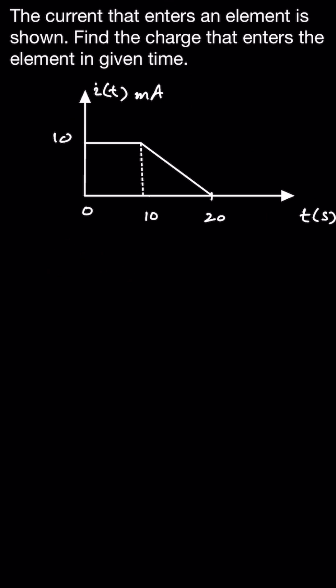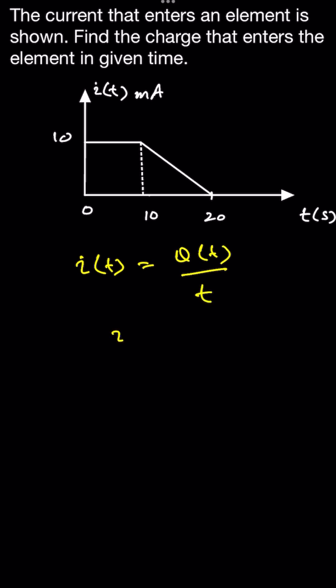For example, the element is a resistor. As we know that I(t) is equal to Q(t) divided by time, we can say that I is equal to dQ(t) divided by dt.